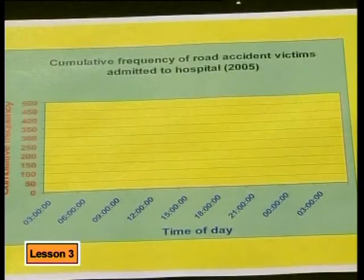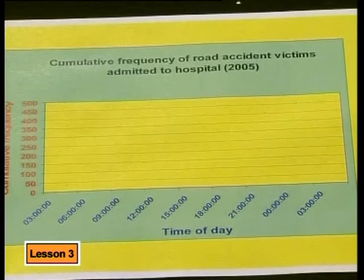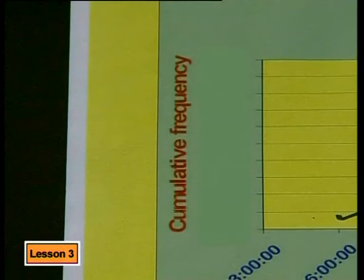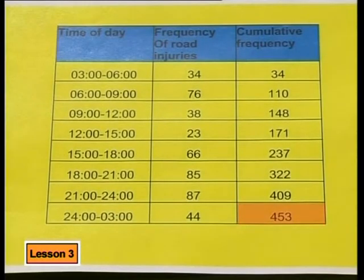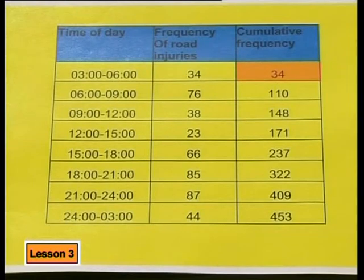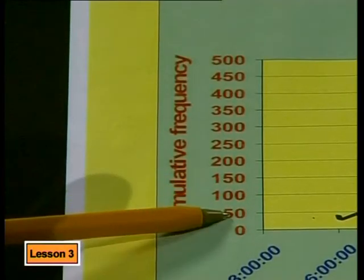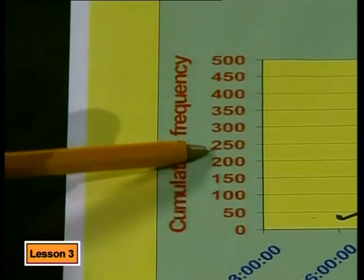As with the frequency polygon, we can use the same class intervals of three hours on the horizontal axis, the x-axis. The x-axis represents the time of day. The vertical axis, or y-axis, will represent the cumulative frequency. We need to choose a suitable scale for the y-axis. The maximum number we need to plot is 453 and the minimum value is 34. So let's take the y-axis up to 500, marking intervals of 50 — so 0, 50, 100, 150, and so on up to 500.